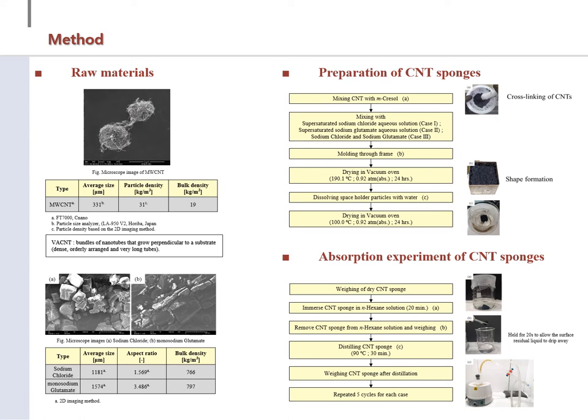Three cases of absorbent were prepared depending on type of salt. Case 1 was prepared from a mixture of CNT and sodium chloride with a mass ratio of salt to CNT of 32. Case 2 was prepared from a mixture of CNT and sodium glutamate with a mass ratio of salt to CNT of 50.